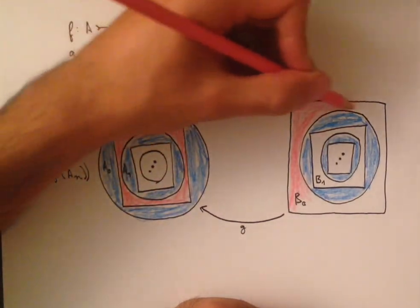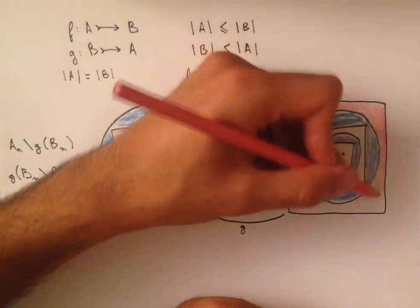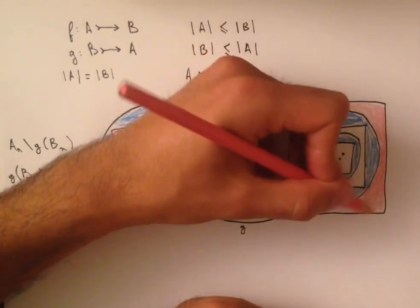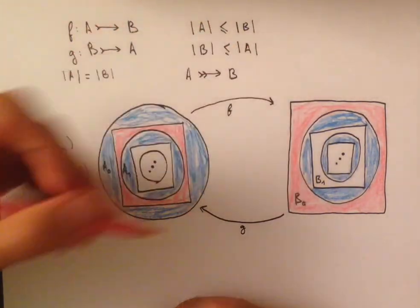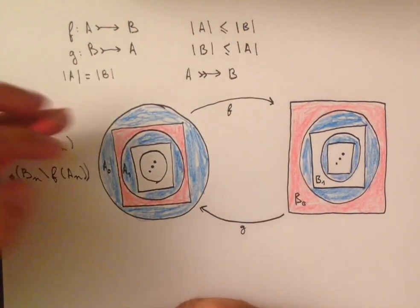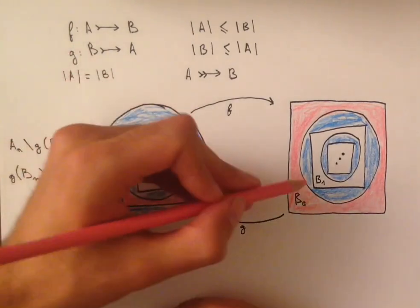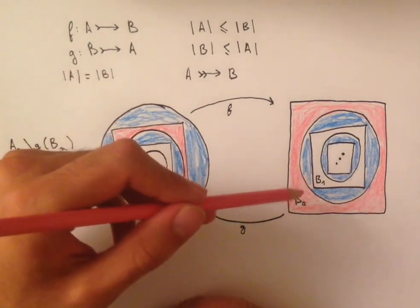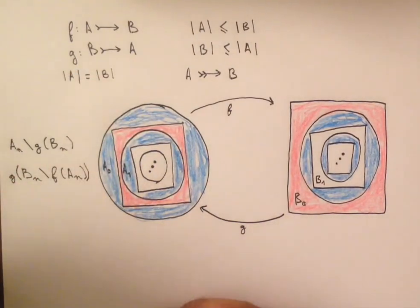Except that we can't use F to get to it anymore, because F just doesn't map like that. And so instead, we're going to use G inverse. And so for each point here, we're going to take the point in here that when you apply G to it, you get the point that you started with. And that is a well-defined function because we have an injection.